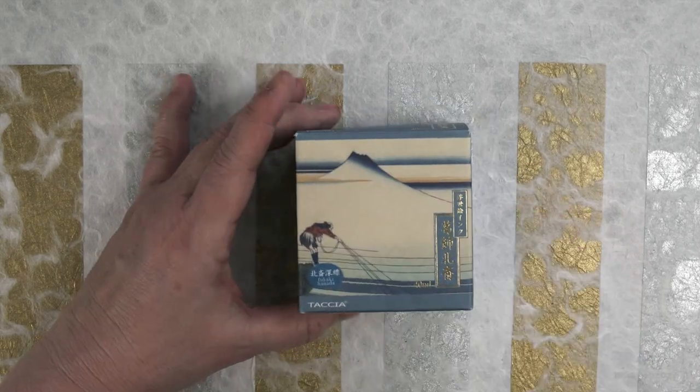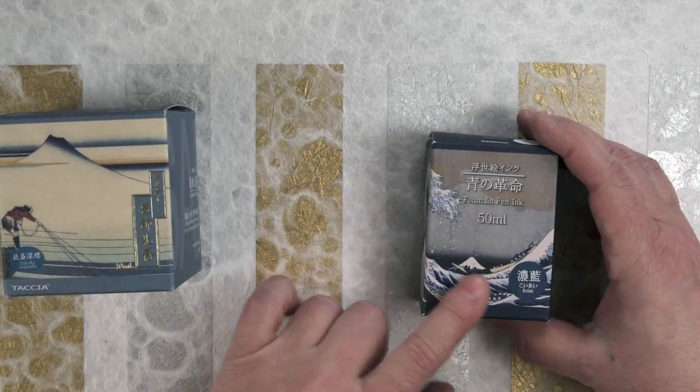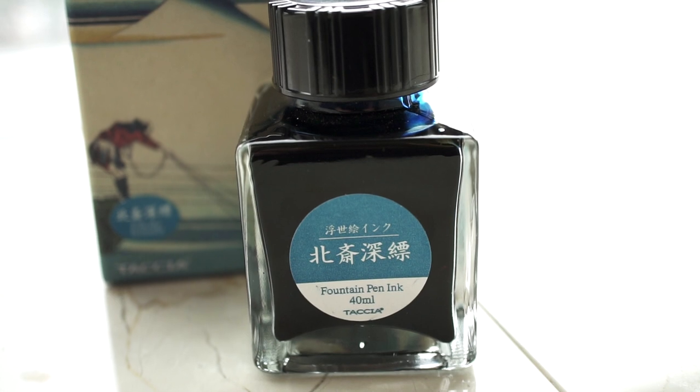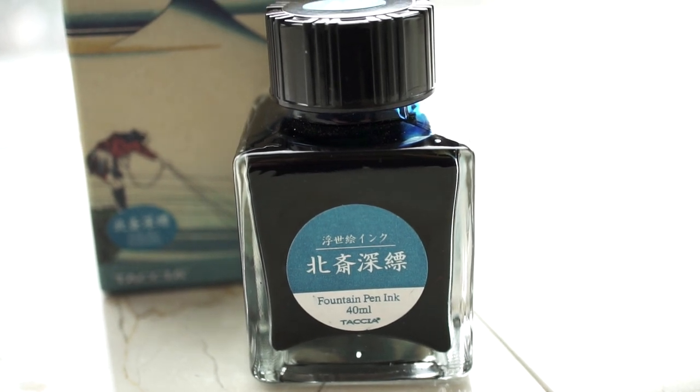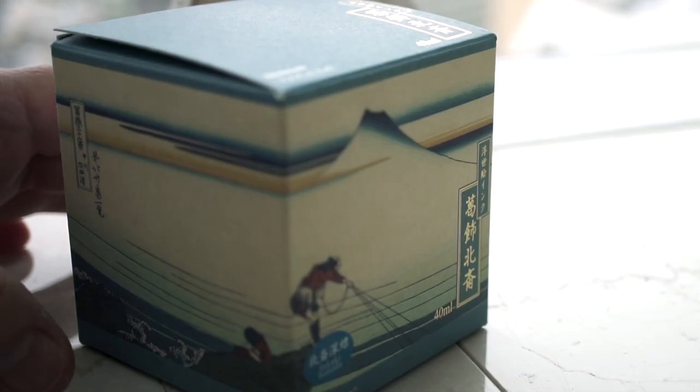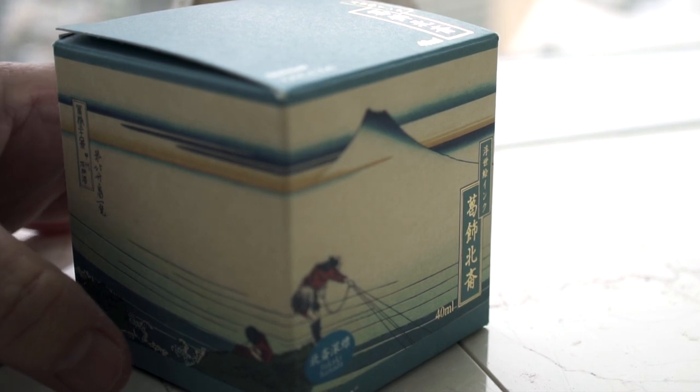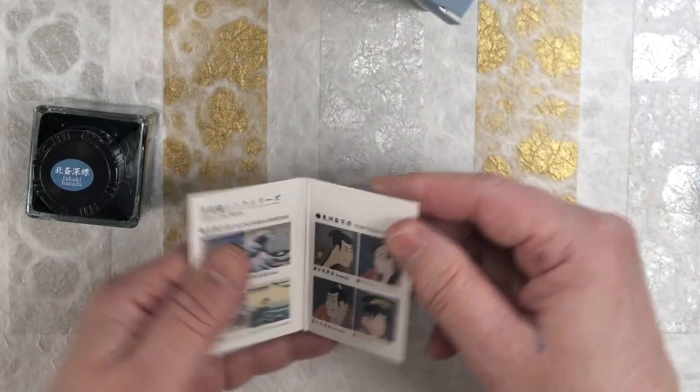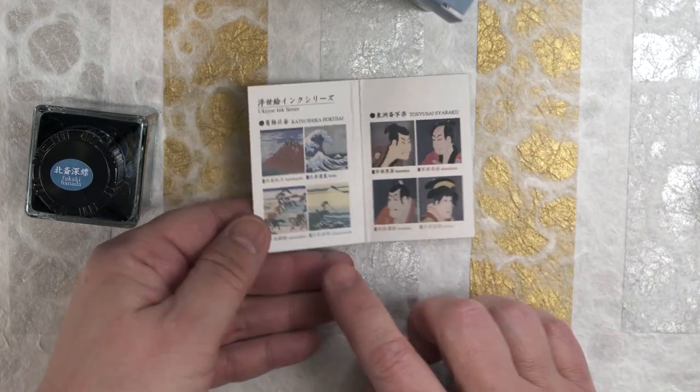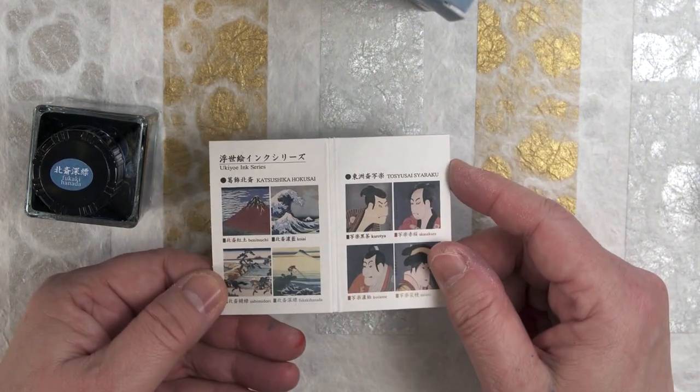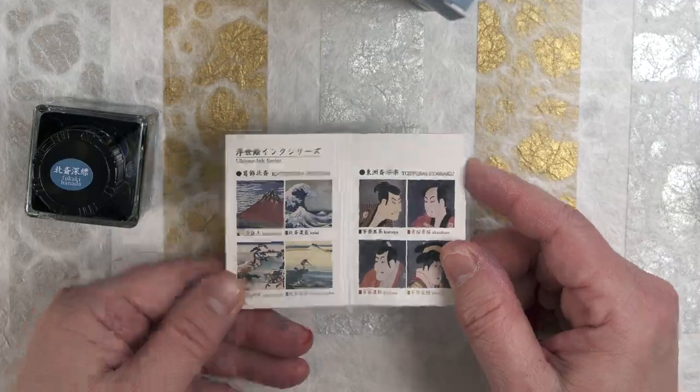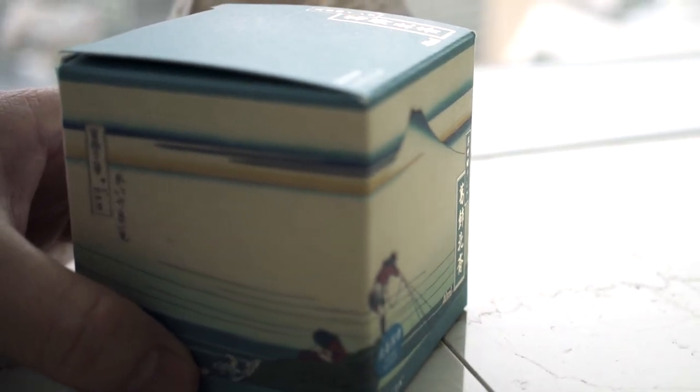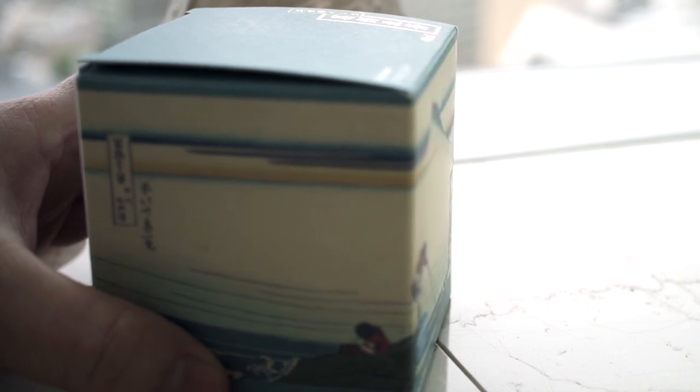Packaging is the real star in Tassia's Yukioe inks. The bottles are kind of average, but the boxes are beautiful. The box has a print of a Yukioe. Inside each box of ink is a little leaflet that shows all the different Yukioes in their series. The inks are wonderful blue, easy to write with colors, but the boxes steal the show.